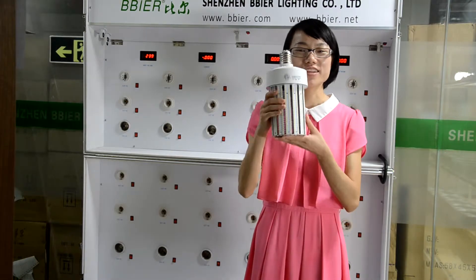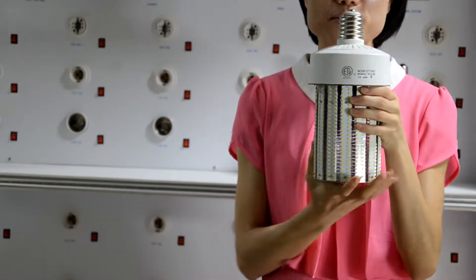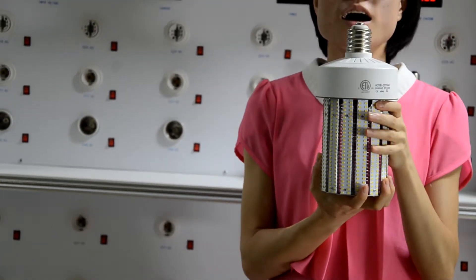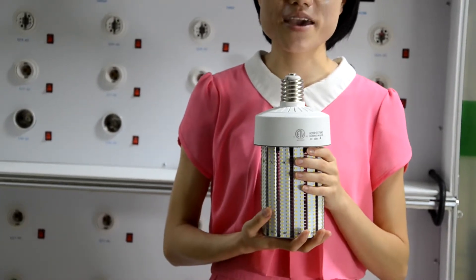Okay, today I want to show you the LED corn bulb. Take a look at this bulb. First, from the top, you will see the screw base. It's a model base E14. They also can build the E27, the medium base.